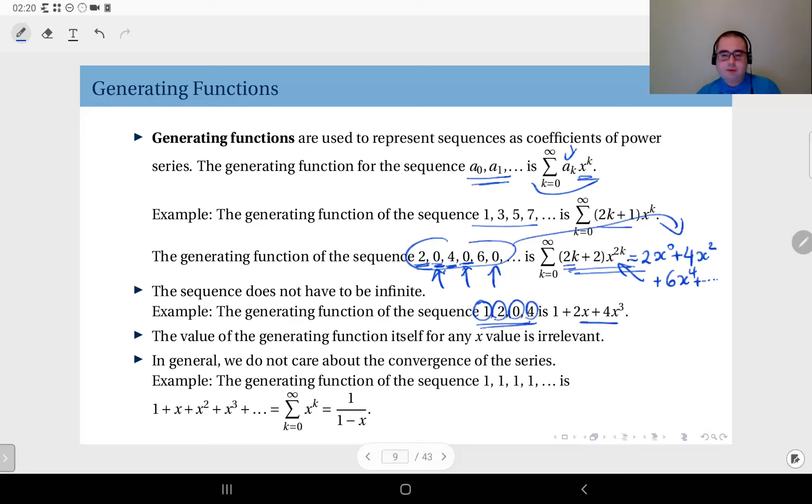You can see this as an infinite sequence whose values are zero beyond the fourth term, or you can just see this as a finite sequence, which doesn't make any difference. This is the generating function.